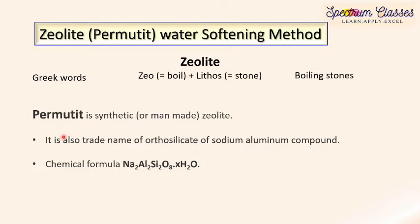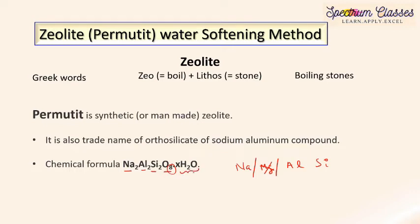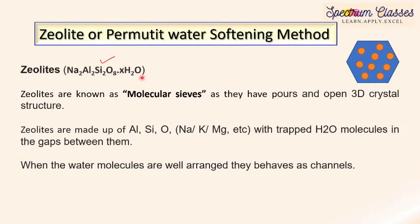Now, are zeolite and permutit the same or different? Permutit is the man-made or synthetic zeolite. Permutit is specifically the trade name for the orthosilicate of sodium aluminum compound, and its chemical formula is Na₂Al₂Si₂O₈·XH₂O. To remember this: in the third period, sodium, magnesium, aluminum, and silicon are in the same period. Simply cut out the magnesium and use the other three elements — sodium, aluminum, and silicon — giving Na₂Al₂Si₂O₈·XH₂O. The XH₂O makes it hydrated, trapped in the cavities or pores of the sodium aluminosilicate.